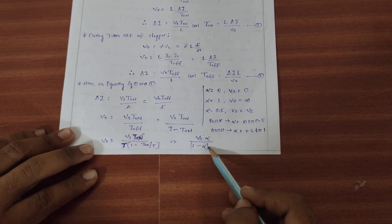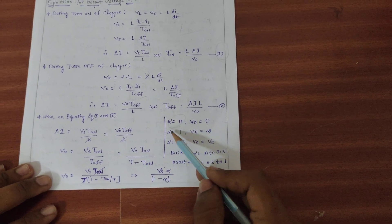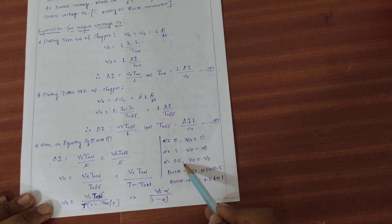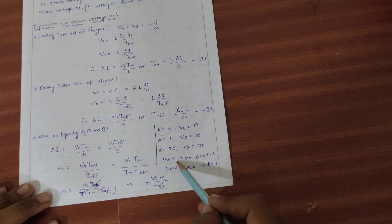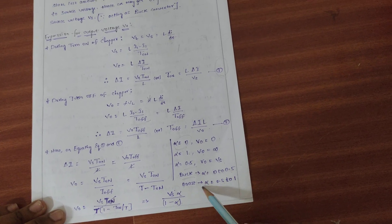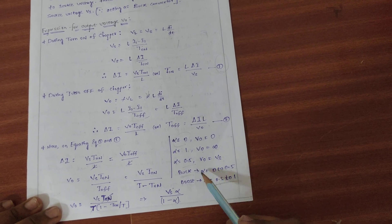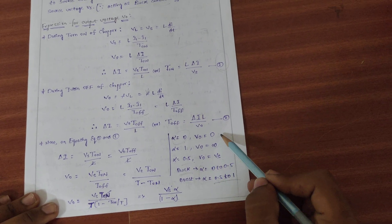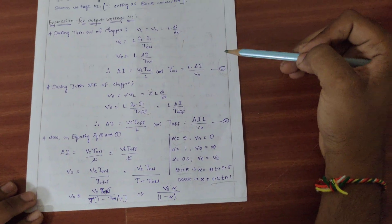The final output voltage formula gives V0 = VS × alpha / (1 - alpha), where alpha is the duty cycle. For alpha = 0, V0 = 0; for alpha = 1, V0 is infinite; and for alpha = 0.5, V0 = VS. When alpha is less than 0.5, it acts as a buck converter, and when alpha is greater than 0.5, it acts as a boost converter. By varying the alpha value, this buck-boost converter can be acted as either the buck converter or the boost converter. This is the entire working and construction of the buck-boost converter.